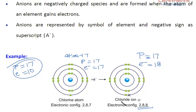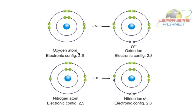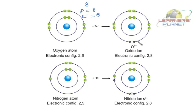Let's take one more anion example — the oxygen atom. Atomic number 8, so 8 protons and 8 electrons, with configuration 2, 6. To attain 8 electrons in its outermost shell, it gains 2 electrons, making the outermost configuration 8 and the full configuration 2, 8. The ion formed is the oxide ion (O2−), because the number of protons is still 8 whereas the number of electrons has become 10.